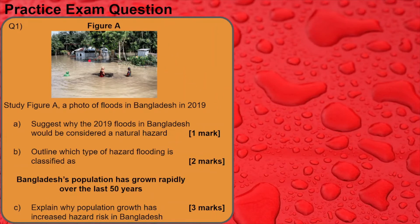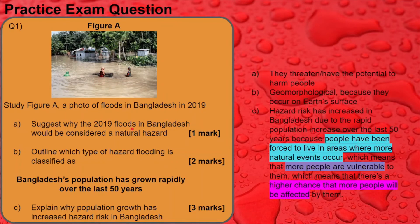So here's an exam question you can pause and have a go at now. There haven't actually been any exam questions on this topic in papers made so far, so I've made one up. You're almost certainly going to get a photo somewhere in your exam paper — use the photo, use the question, answer the questions. Suggest why the 2019 floods would be considered a natural hazard. A natural hazard is a natural event that has the potential to harm people. You can say it has the potential to harm people — that's why it's a natural hazard — because you can see in the photo that there are people nearby, so it's a natural hazard and not just a natural event.